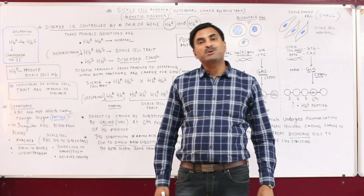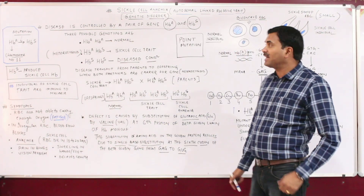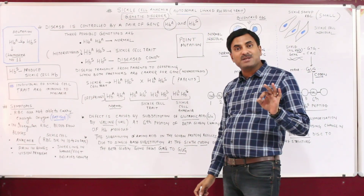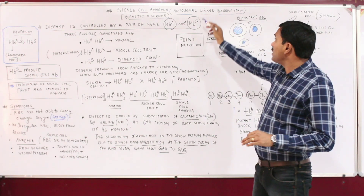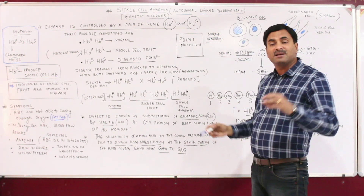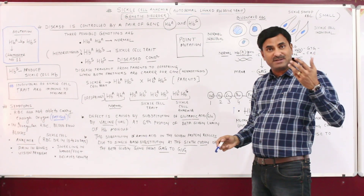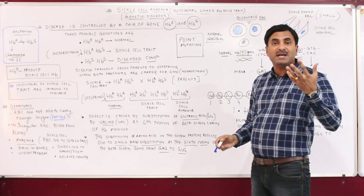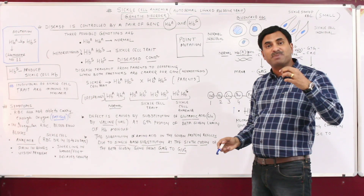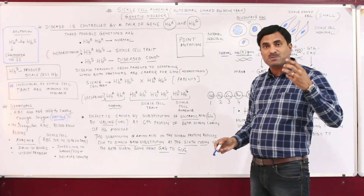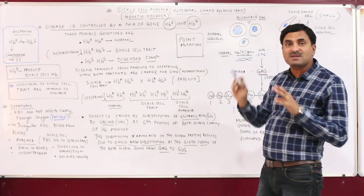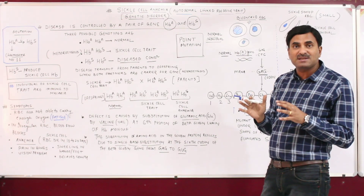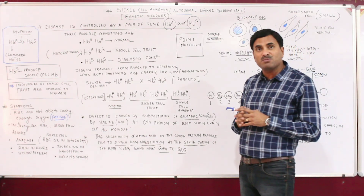Welcome, students. Today we are going to discuss a very important topic: sickle cell anemia. Sickle cell anemia is a genetic disorder and it does not have any permanent cure. It is an autosomal linked recessive trait. Hemophilia and color blindness are sex-linked traits because their genes are present on the sex chromosomes, but sickle cell anemia is an autosomal linked recessive trait — the responsible gene is concerned with an autosomal chromosome.